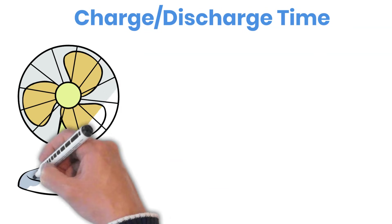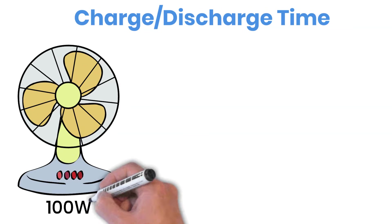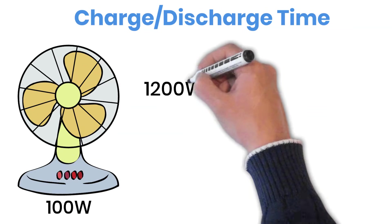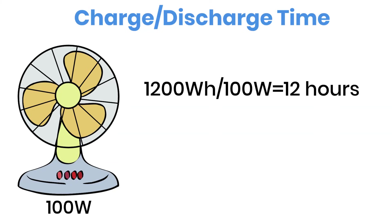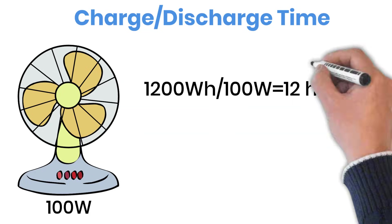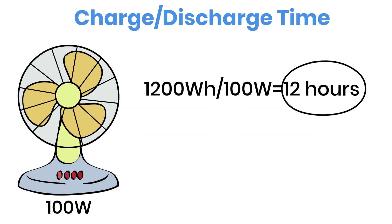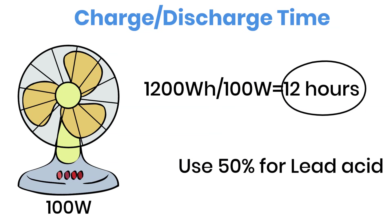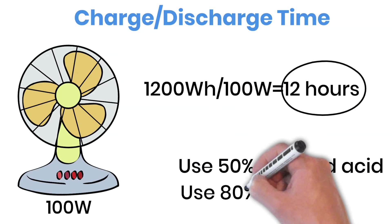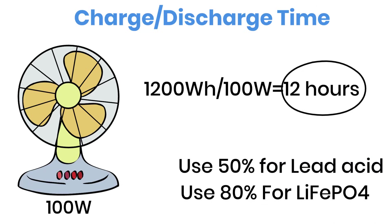What does that mean for run time? If a fan uses 100 watts, a 1,200 watt hour battery could theoretically run it for 12 hours — because 1,200 watt hours divided by 100 watts equals 12 hours. I say theoretically, because you should never run a battery down to zero. For safety and longevity, use about 50% of a lead acid battery's capacity, and around 80% of a lithium iron phosphate battery's capacity.